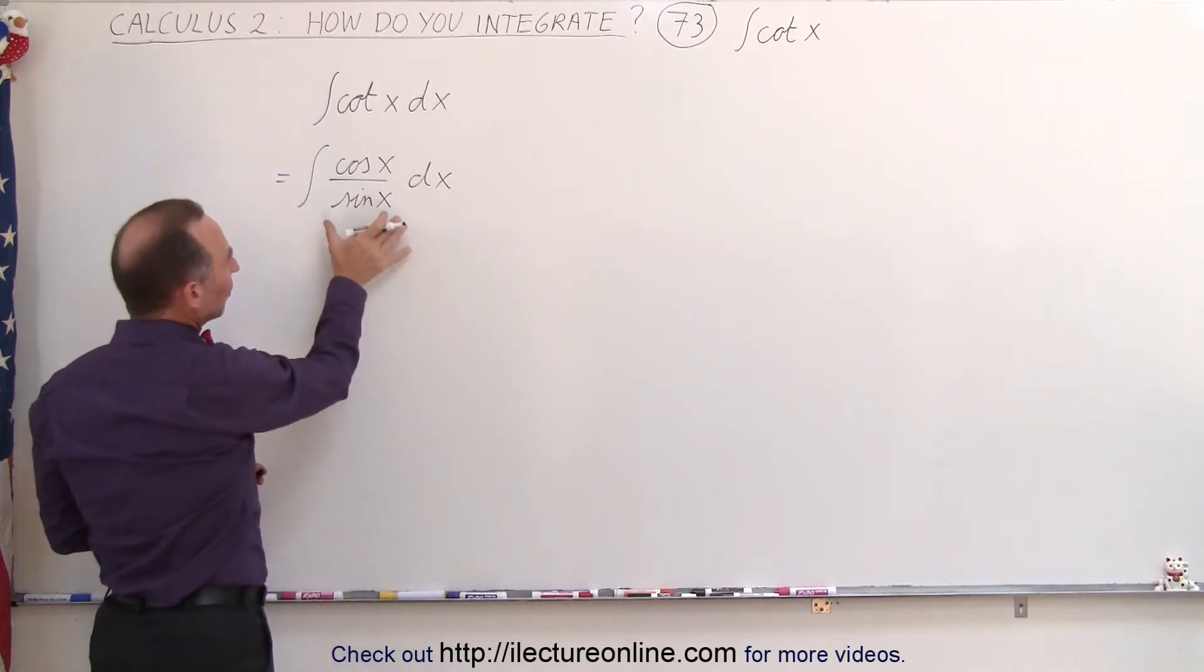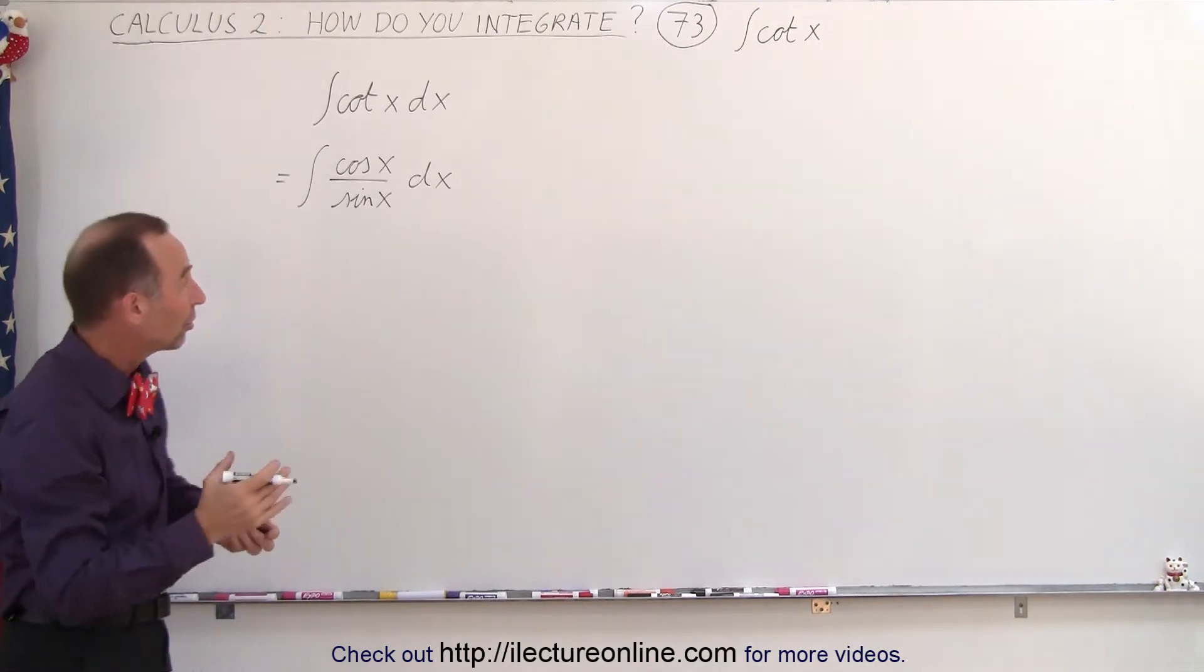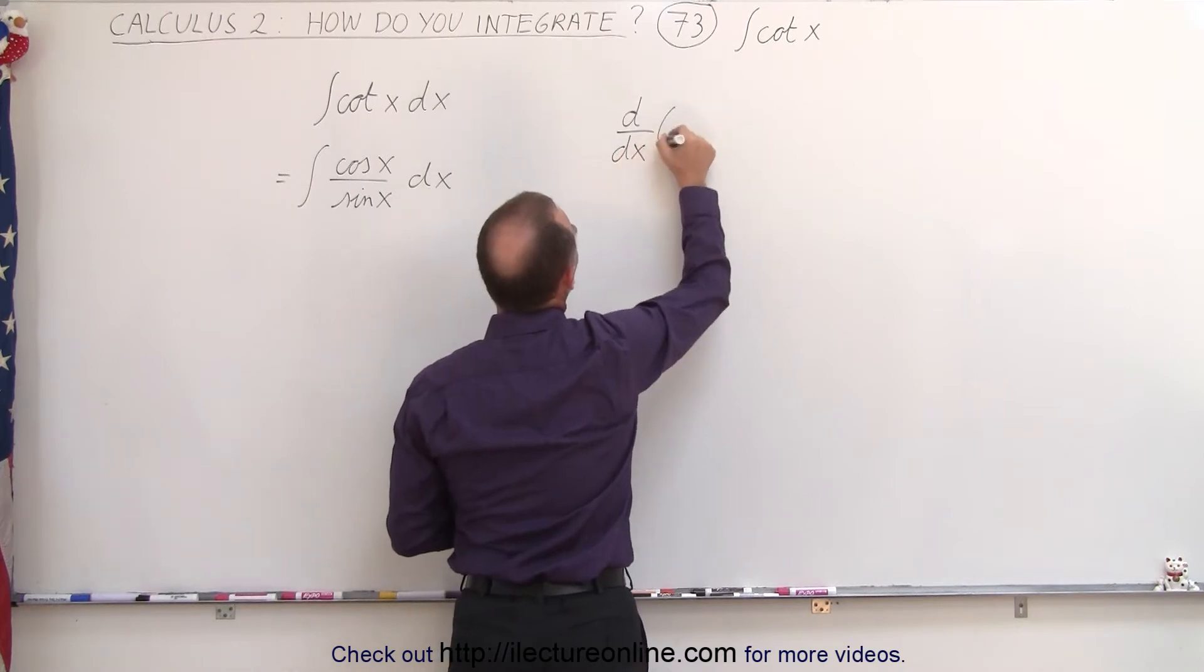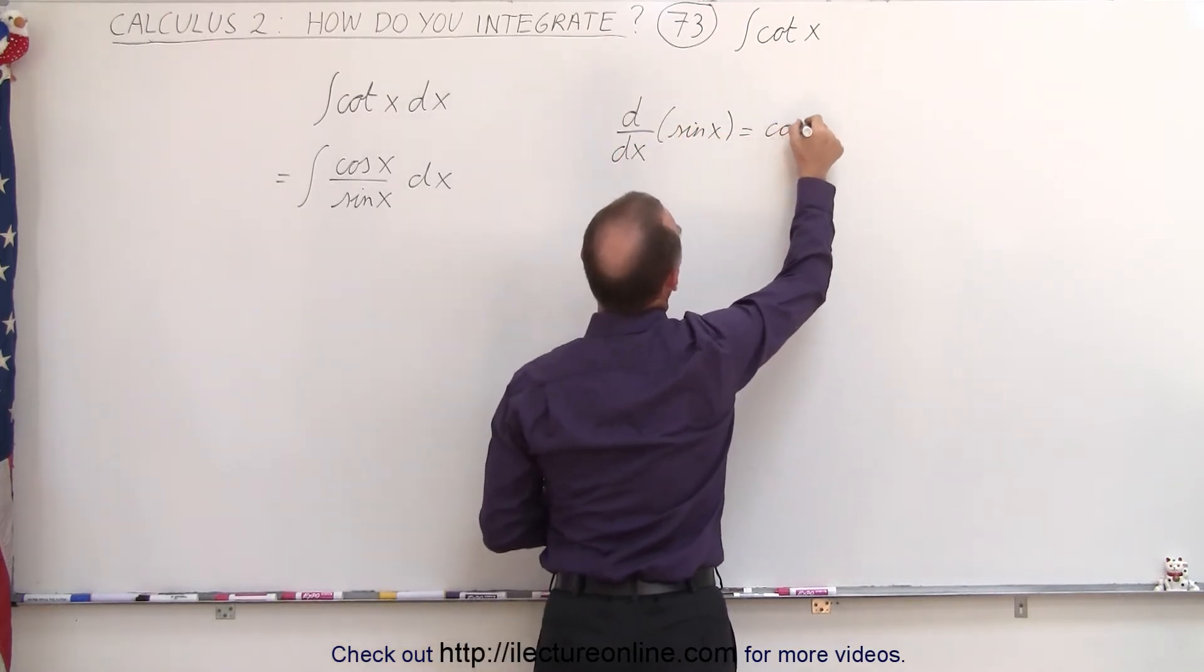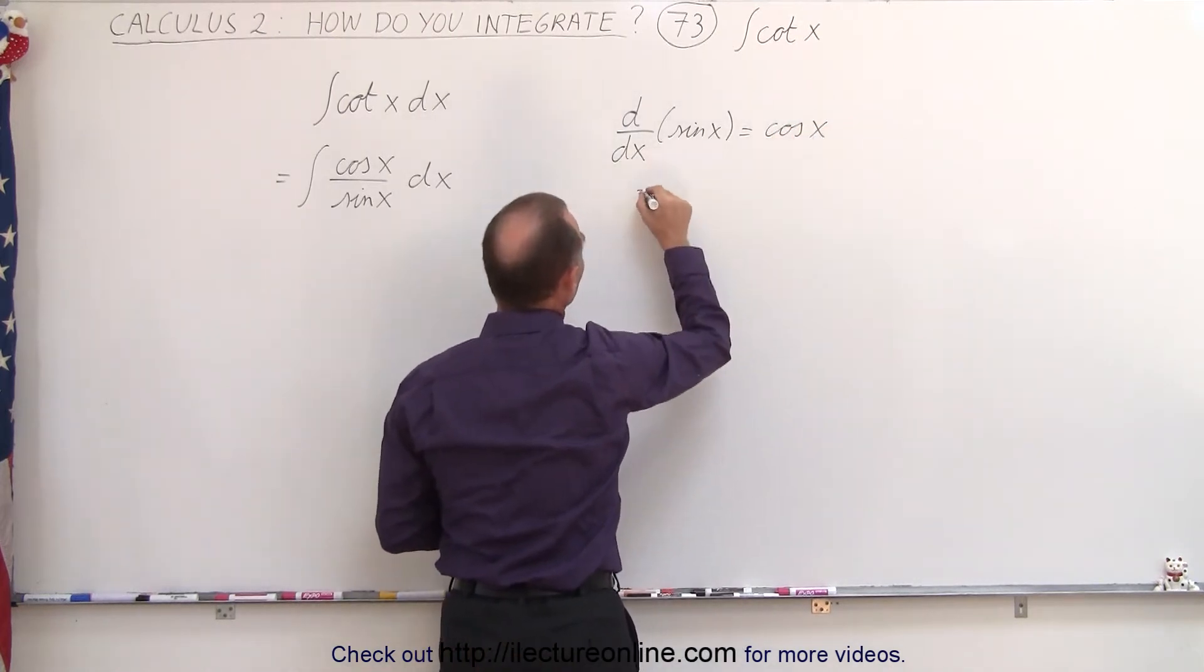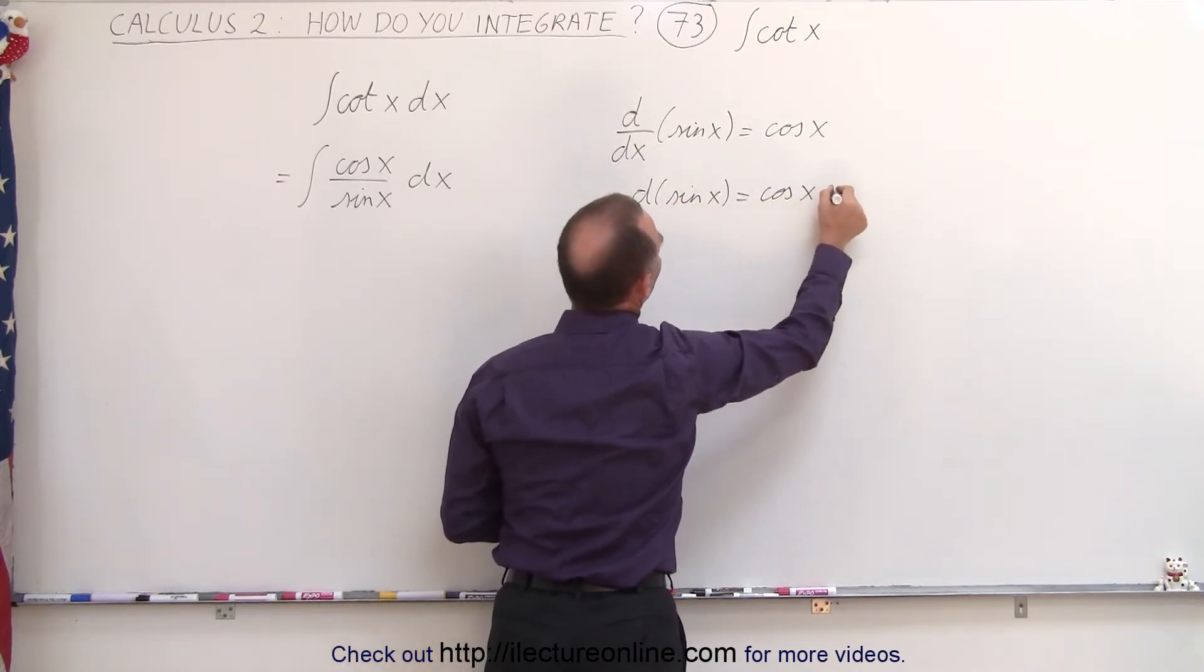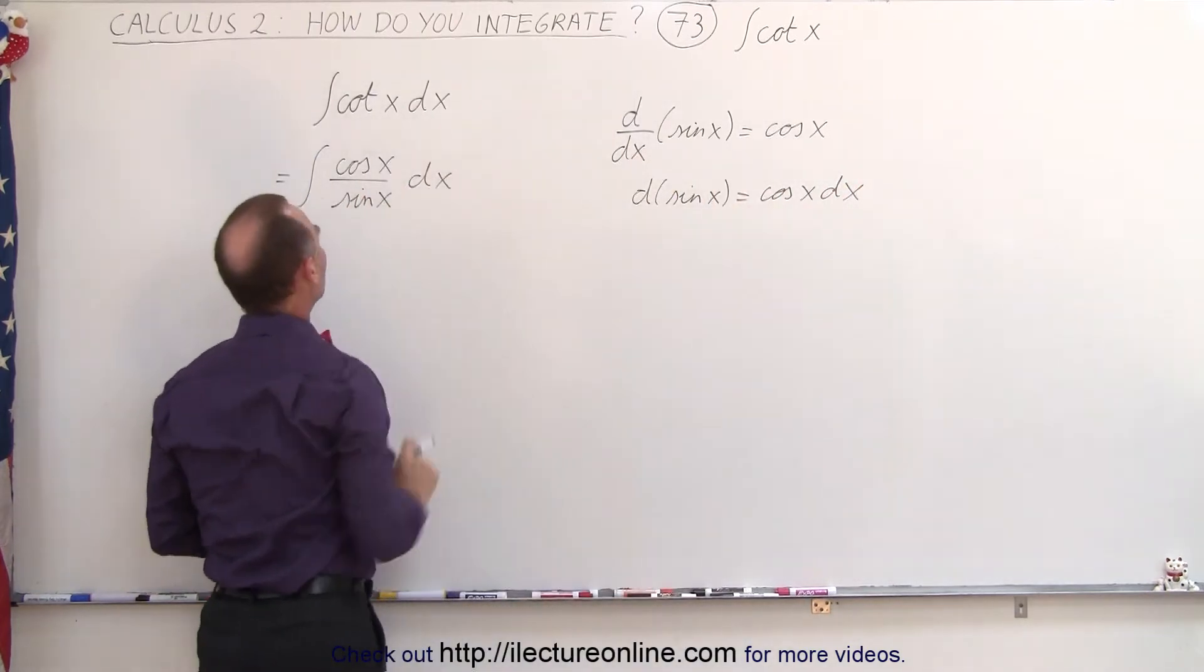And again in the same way we look at the denominator, we look at the numerator, and we realize the numerator is actually the differential of the denominator. In other words, the d/dx of the sine of x is equal to the cosine of x, the positive cosine, and then if we move the dx over there, we can see that the differential of the sine of x is equal to the cosine of x times dx, which is exactly what we have in the numerator.